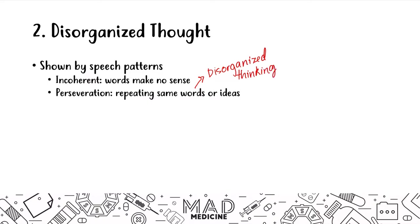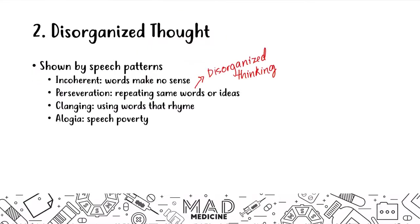Patients can have something called clanging, where a patient uses words that rhyme — like 'the cat hit the mat with the bat.' That's how they talk. There's another thing called alogia, which is speech poverty — they just don't speak properly. It's like the episode from The Office when Kevin cuts out words and says something like 'me like apple.' He just doesn't speak properly. It's speech poverty — just a random reference for those of you who are Office fans.